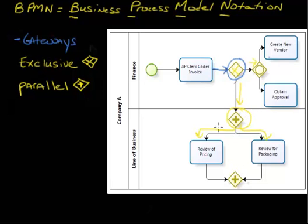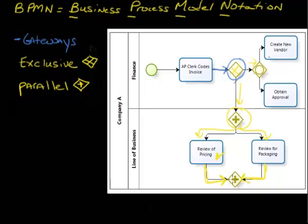Gateways can also be used to synchronize paths. So once we've completed each of these activities — let's say we complete the pricing review first — the sequence flow is going to reach the next gateway and the process will continue forward. If we want the process to wait for another activity, we're going to use another parallel gateway. That parallel gateway indicates we want to wait for all the incoming paths before we continue in the process. So gateways not only control the flow out, they also determine the activation of the gateway based on the flow coming in. In this case it's a parallel gateway, so we wait for both paths to come in before moving forward.